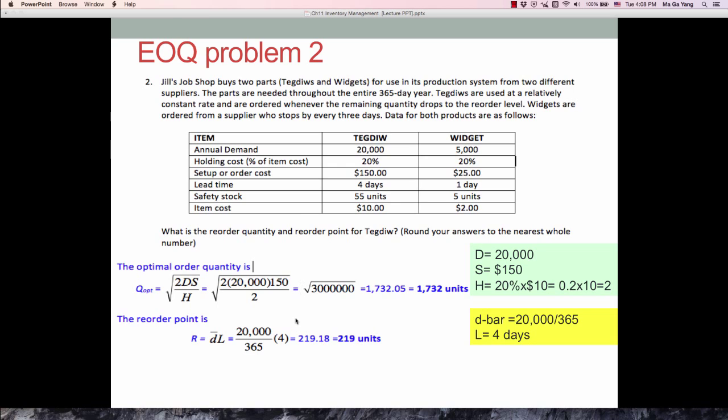So based on these two, EOQ and reorder point, we can set up our inventory policy, which is: when the inventory position drops to 219 units, we place order for 1,732 units more.